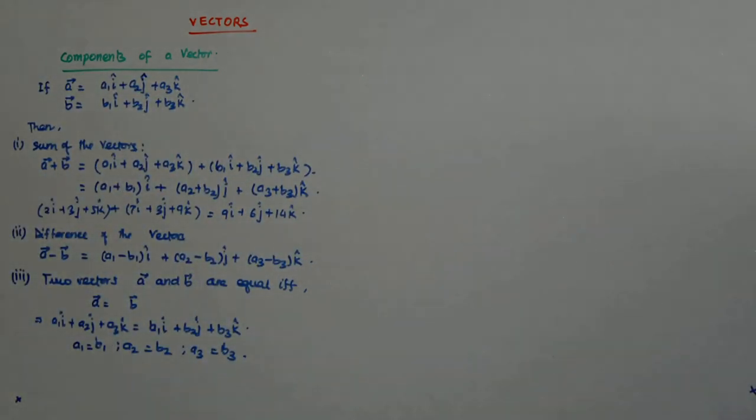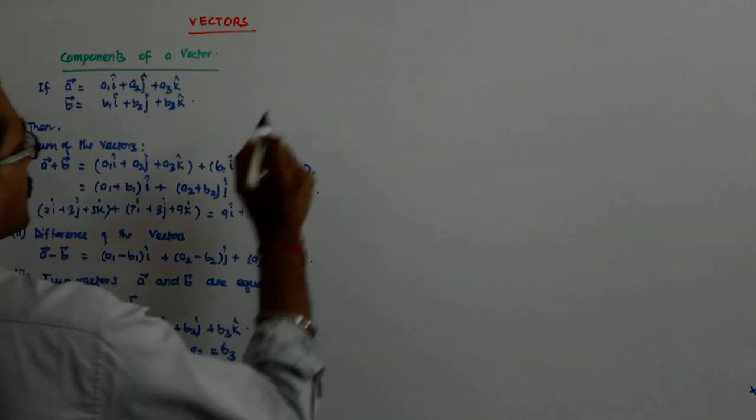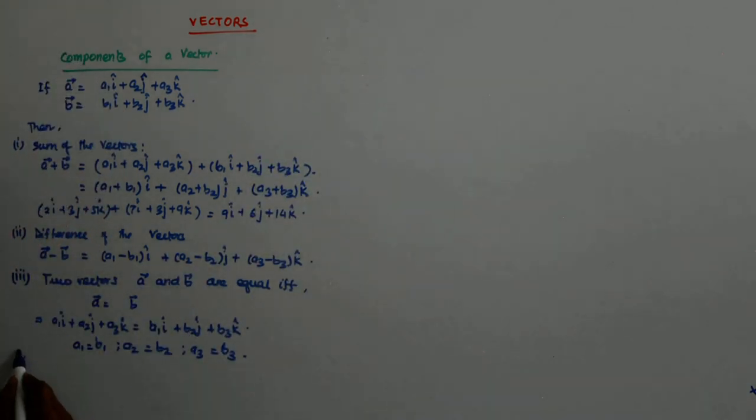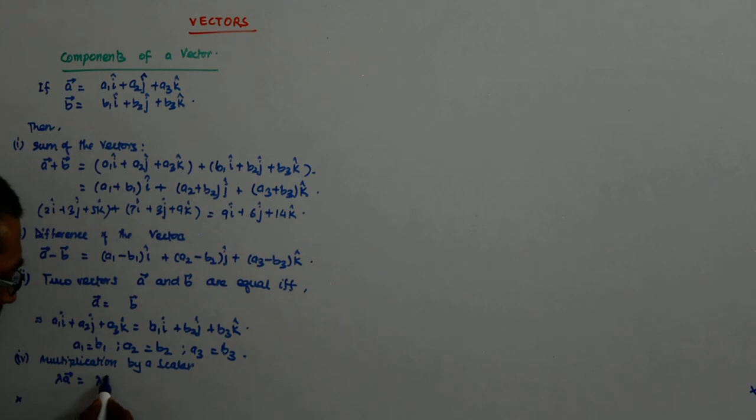Now, what happens if you multiply this vector by a scalar? The fourth is multiplication by a scalar. So, let us say if I multiply lambda by a, then what happens? It becomes lambda a1 i cap, lambda a2 j cap, lambda a3 k cap.